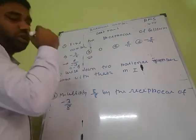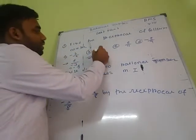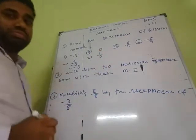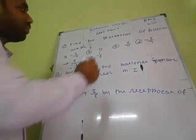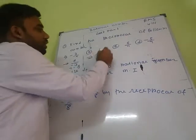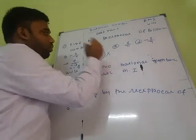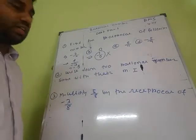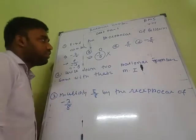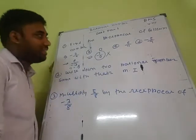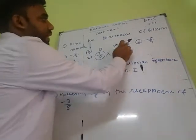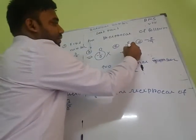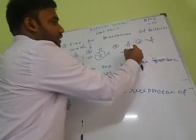Next: reciprocal of 0. It would be 1 by 0, but 1 by 0 does not exist. So the reciprocal of 0 is undefined — it does not exist. Second number: 6 by 11. Its reciprocal is 11 by 6.